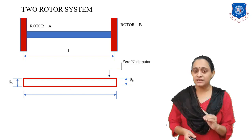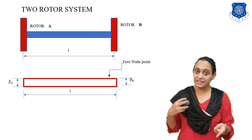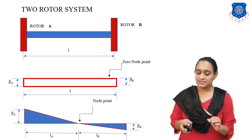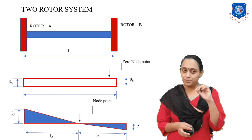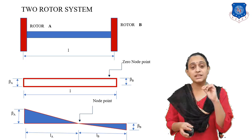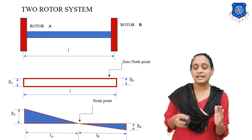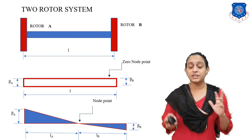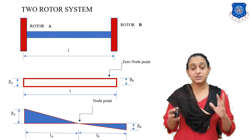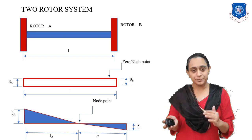Now let us assume rotor A and rotor B rotate in the opposite direction. If they both rotate in opposite directions, then we will get a point known as the node point, where there is zero frequency. From that node point, both the right-hand side and left-hand side will rotate in opposite directions, giving us vibration with respect to each other for rotor A as well as rotor B.